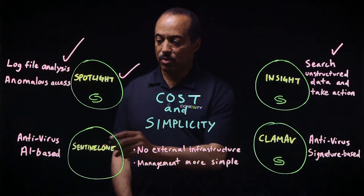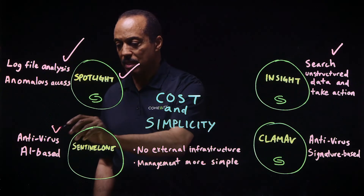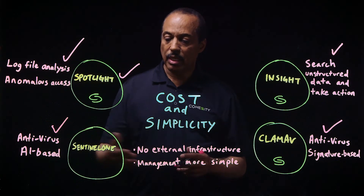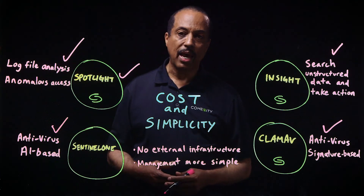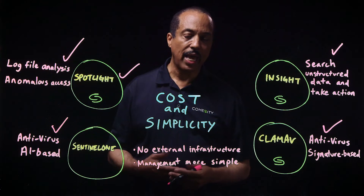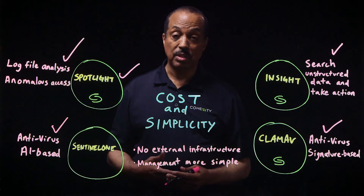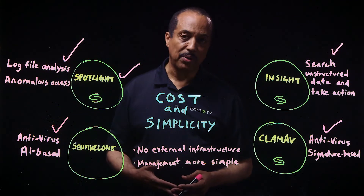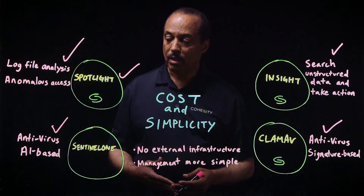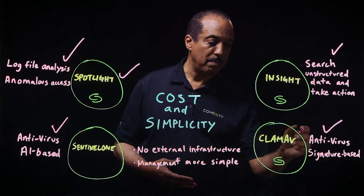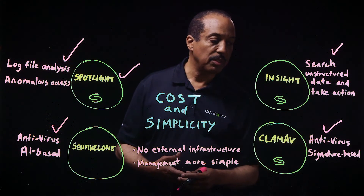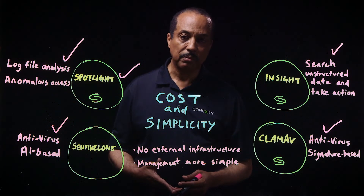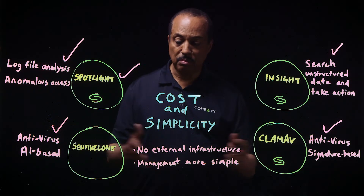And then there's always a need for antivirus protection. With the SentinelOne antivirus app, it's AI-based, so it actually has an algorithm that's smart enough to try and find malware attempts against the system. There's also CLAM-AV, which is a signature-based, or traditional antivirus signature-based, antivirus protection. These can actually be used together.